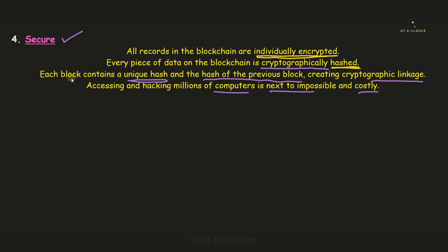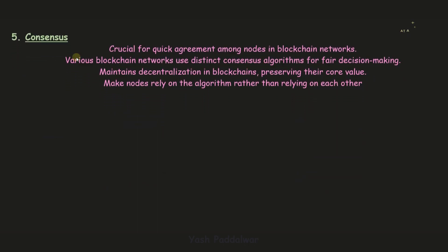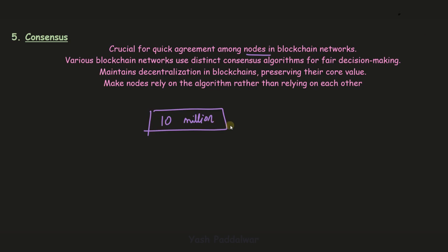The secure feature of blockchain technology is clear. Now let's move on to the last feature — consensus. In the previous video we saw what exactly a consensus algorithm is and its use. Here it becomes a feature because it is the only way through which a quick agreement can be made among all the nodes present inside the blockchain network. With 10 million nodes, there must be an algorithm every single node follows so that any particular transaction can be verified and made valid. This consensus algorithm maintains uniformity and brings all nodes to a common agreement.